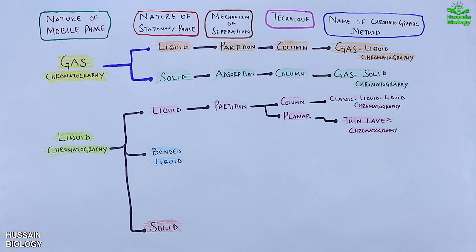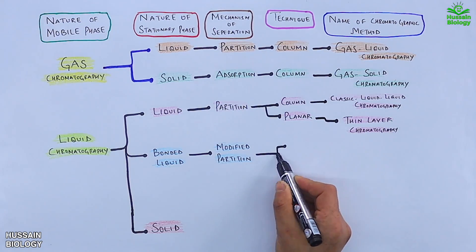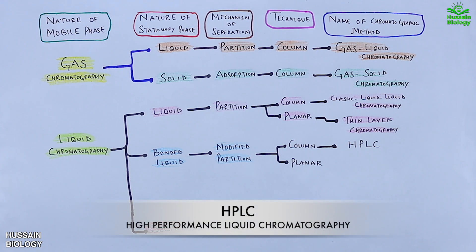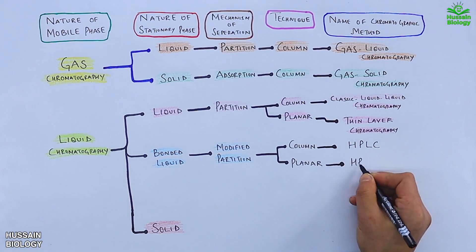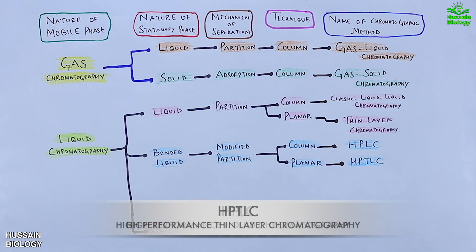The second stationary phase type is bonded liquid chromatography, which by mechanism is classified into modified partition chromatography, and technically classified into column and planar. The column method is named HPLC — high performance liquid chromatography — and the planar method is named HPTLC — high performance thin layer chromatography.